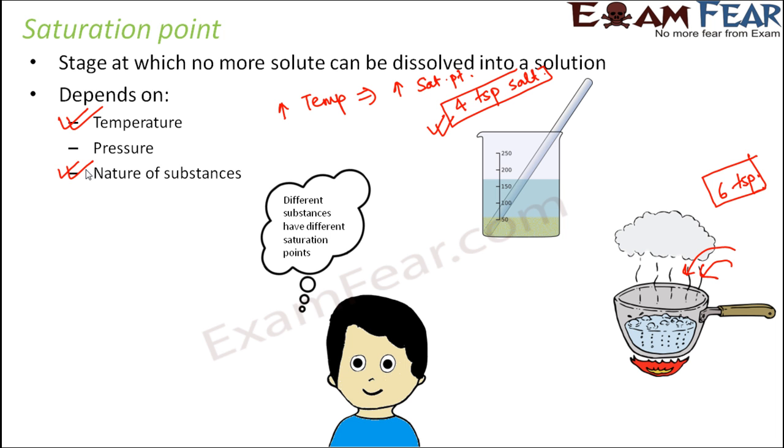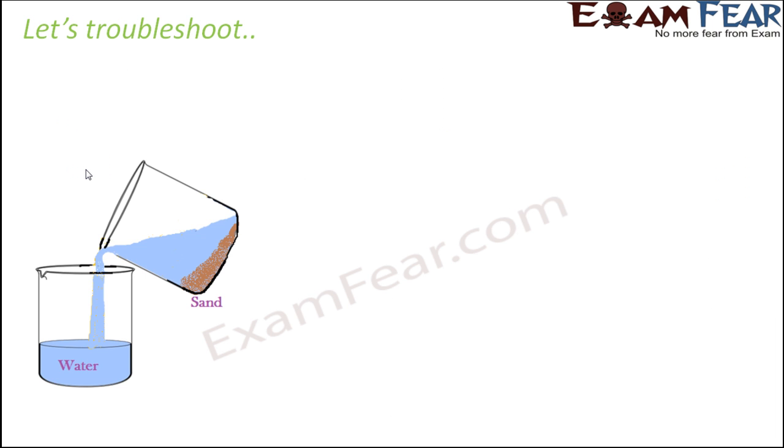Now that we have understood what exactly is saturation point and what is saturated solution, do you think that we will be able to solve the mystery which we had encountered before? Let us try to troubleshoot. We found that we had a mixture of sand and salt. By the end of the separation process, the amount of salt that we recovered was much less than what it was in the mixture. That was our problem statement. Let us see what could have gone wrong.